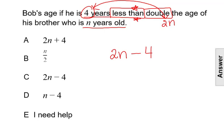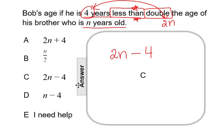So that leads us to the expression in answer choice C. 2n minus four is showing four years less than double the age of his brother who is n years old.